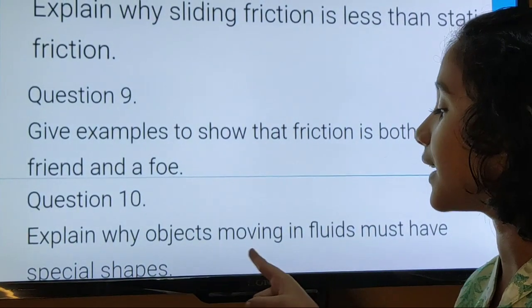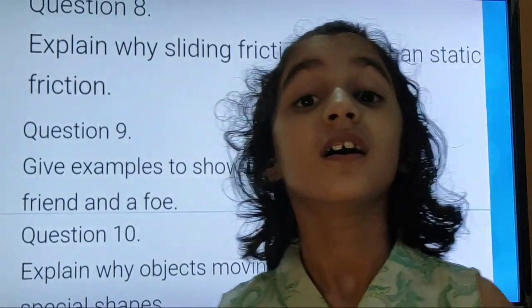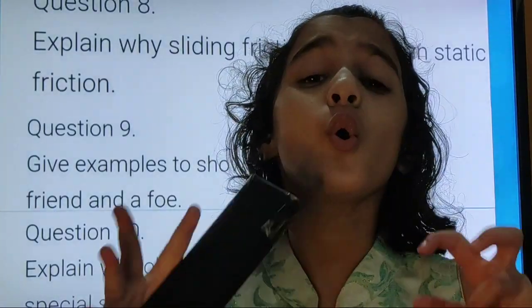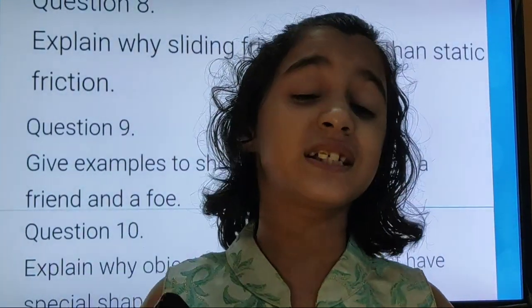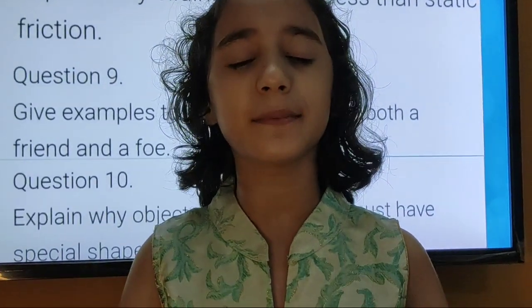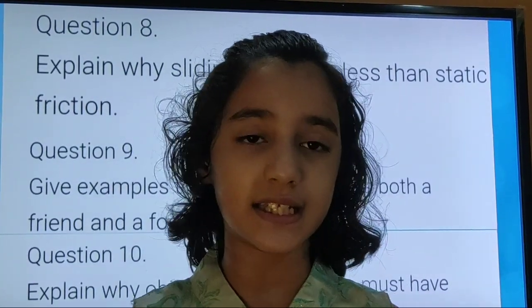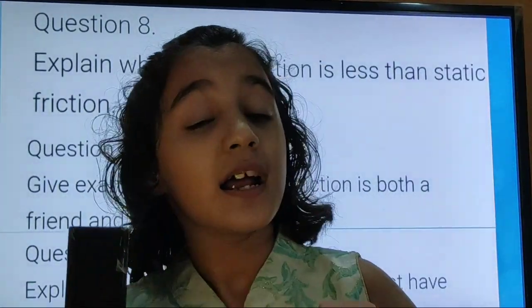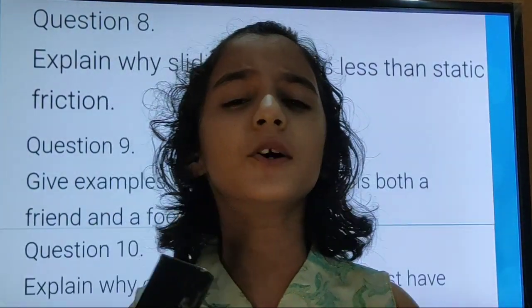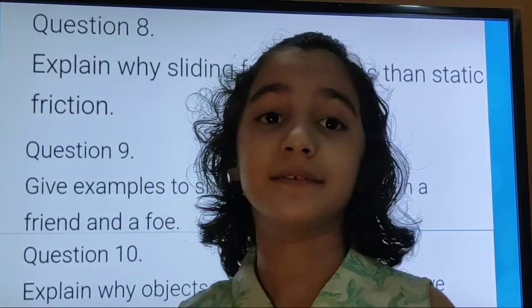Question number 10. Explain why objects moving in fluids must have special shapes. Answer: Objects moving in fluids must have special shapes to overcome the fluid friction acting on them. Efforts are made to minimize the friction, so objects are given special shapes with pointed ends and a broader middle portion that gets tapered at the back, called streamline. Thank you.